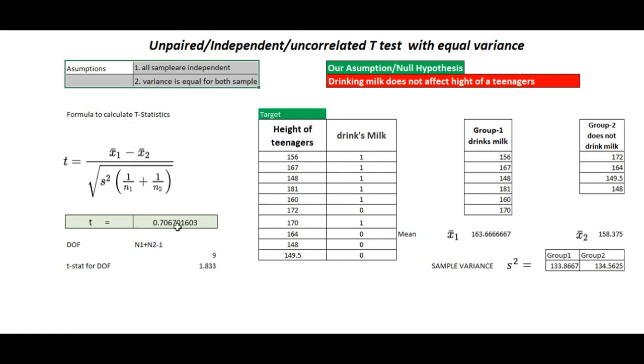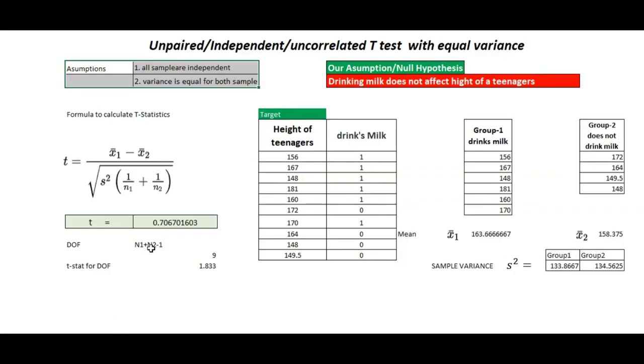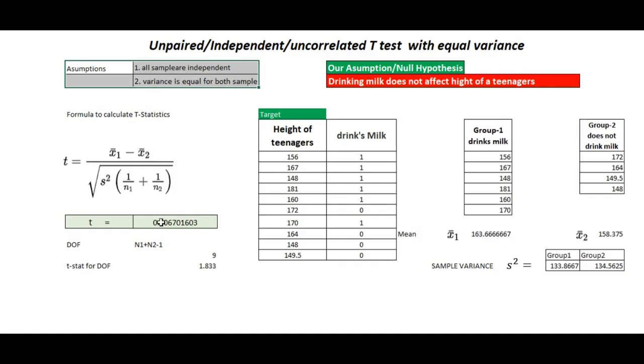We use a t-table with axes for degree of freedom and confidence interval. At a 0.95 confidence interval and degree of freedom n1 + n2 - 1 = 9, the table gives a critical t-value of 1.83. Our calculated t-statistic of 0.70 is less than 1.83, so we cannot reject the null hypothesis. Therefore, we cannot say that drinking milk is going to affect height, because there is no significant difference between the means of the two samples.